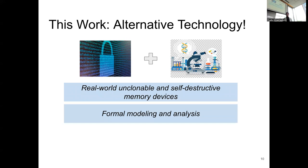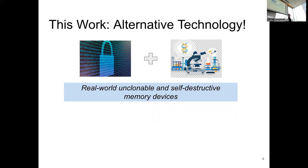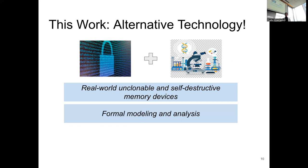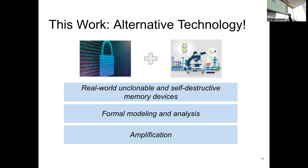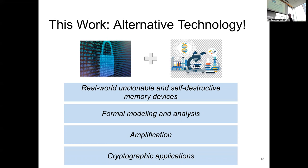If a device is unclonable, you cannot replicate it and do more and more read queries. You have just one shot — you have one memory device, you retrieve the message, and once it is retrieved, it self-destructs. If it is clonable, you can clone it and query the second message, so you will not have the one-out-of-two OT functionality. We also want to do that in a rigorous way, laying down foundational modeling and analysis, and devise amplification techniques to build more sophisticated and provably secure cryptographic applications.